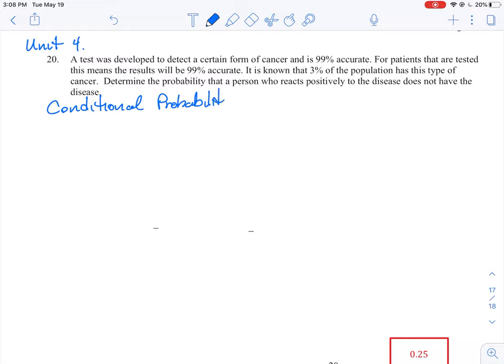The first thing you have to do is recognize that this is a conditional probability type problem. What we're looking at is the probability of a person that tests positive for the disease given that they actually do not have the disease.